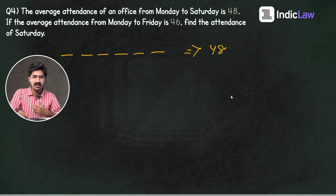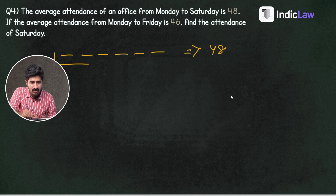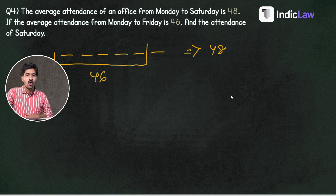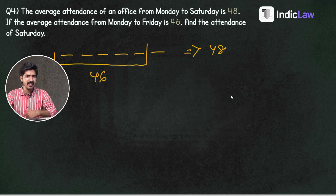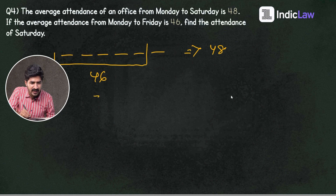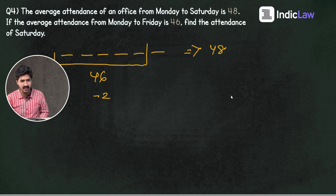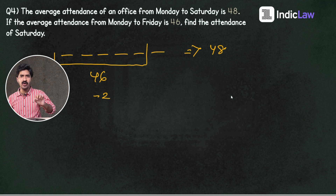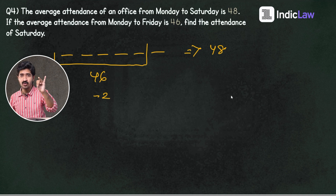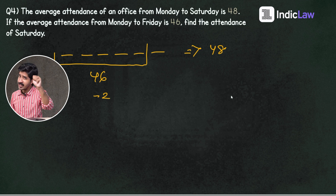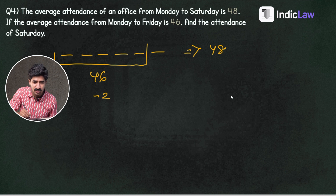What is the average attendance from Monday to Friday? It is 46 — that is 5 days. The average is 46 compared to 48, so the difference is minus 2. If you add this difference across all 5 days, minus 2 into 5 is equal to minus 10. So the attendance shortfall is minus 10 over the 5 days.